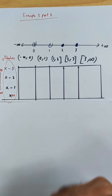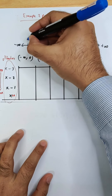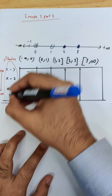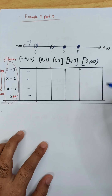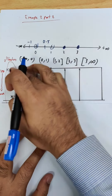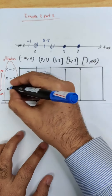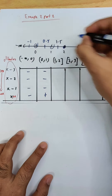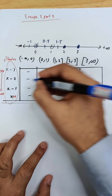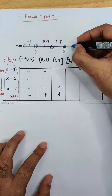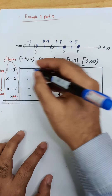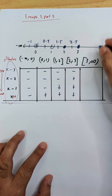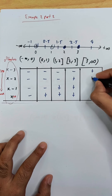Choose test values for each interval. For negative infinity to 0, use negative 1: gives negative, negative, negative. For 0 to 1, use 0.5: negative, negative, negative, positive. For 1 to 2, use 1.5: negative, negative, positive, positive. For 2 to 3, use 2.5: negative, positive, positive, positive.